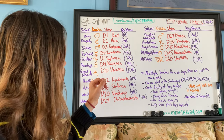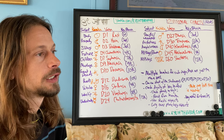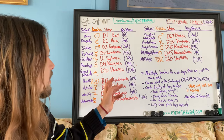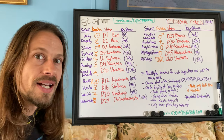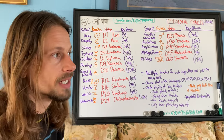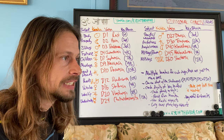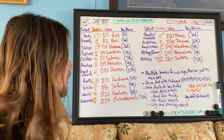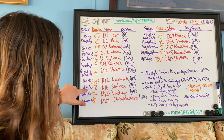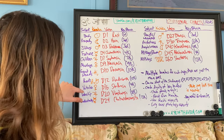The D12, the Dvadashamsha, and the 12th bhava are what you look at for parents and ancestral karma. Rahu and Ketu are the Karakas because they represent ancestral karma. This Varga is fascinating for understanding what karma has been passed down through parents.